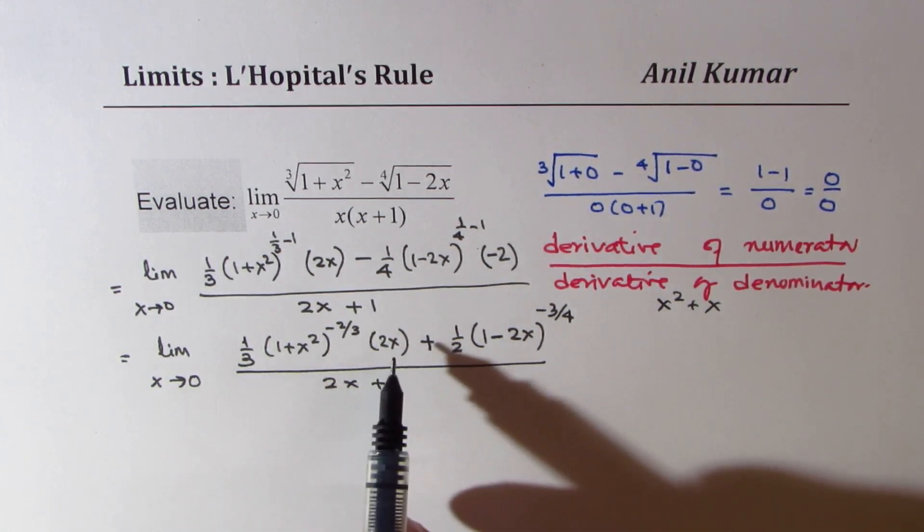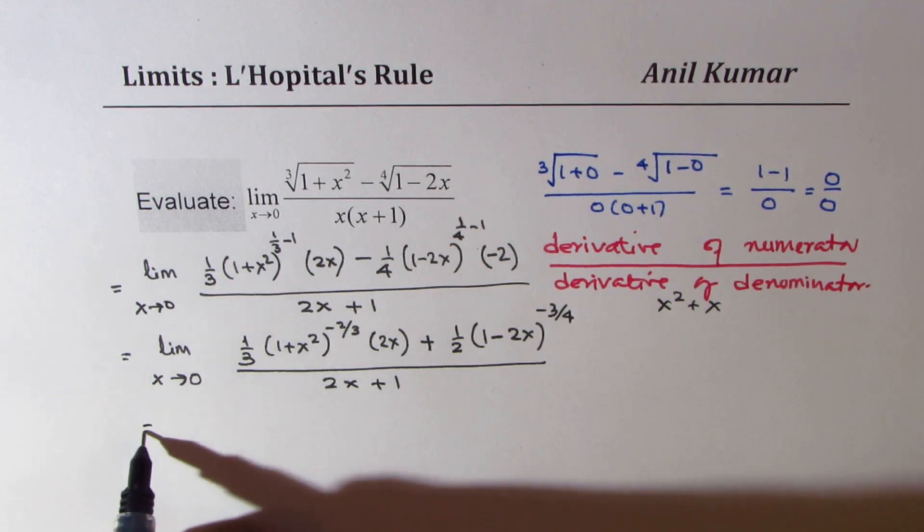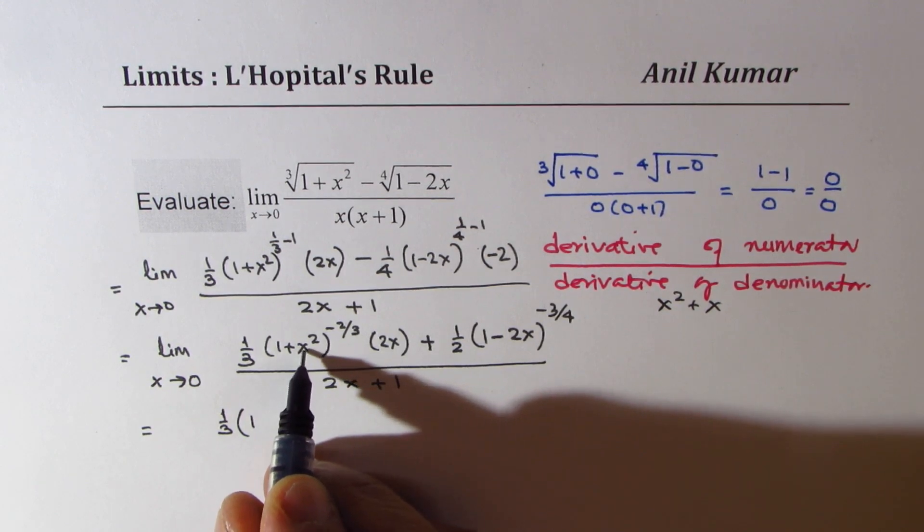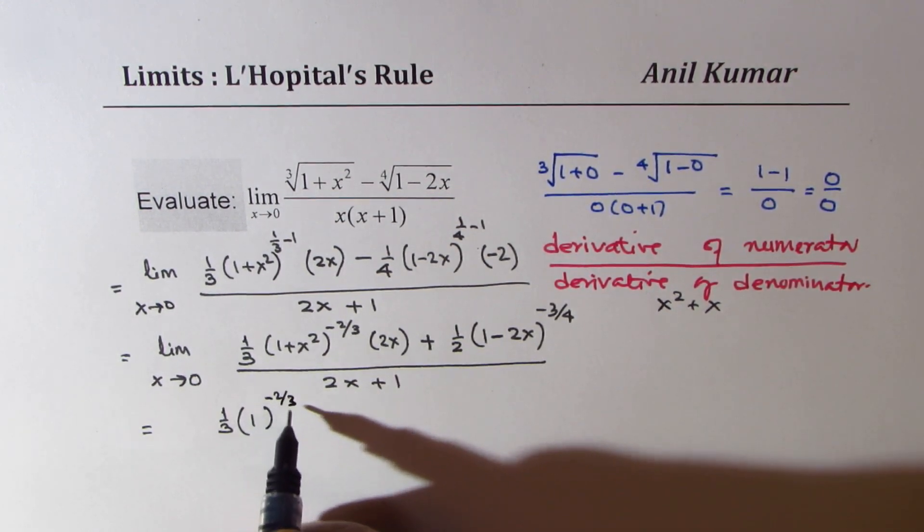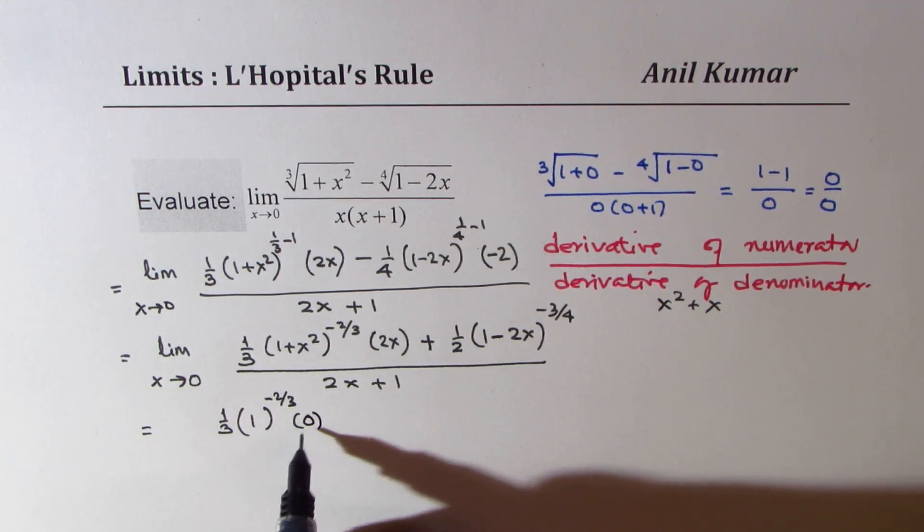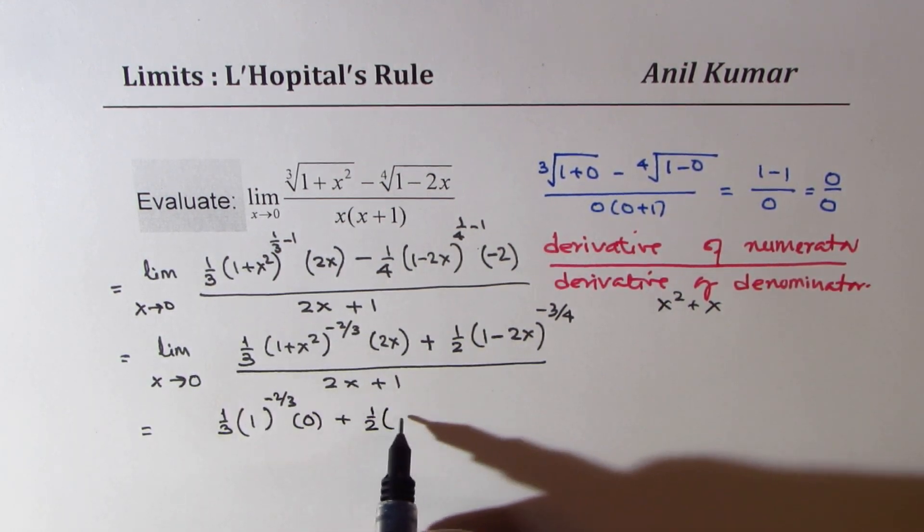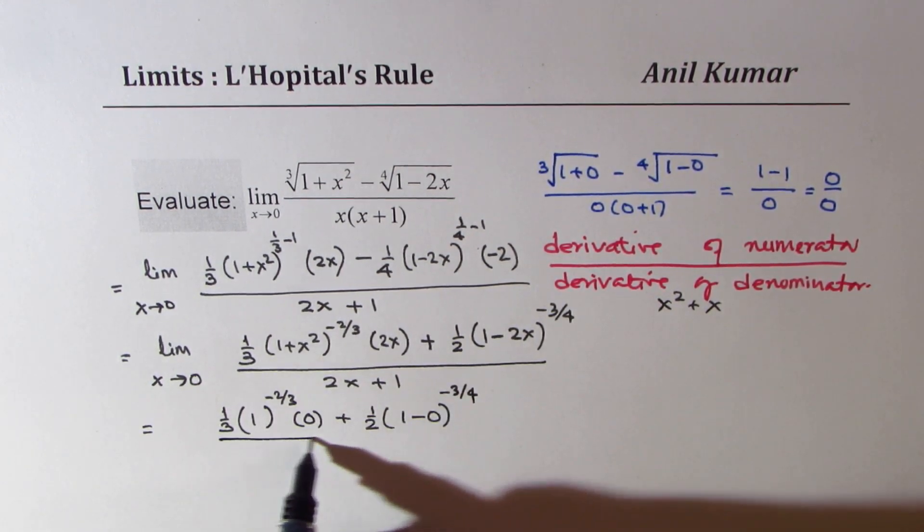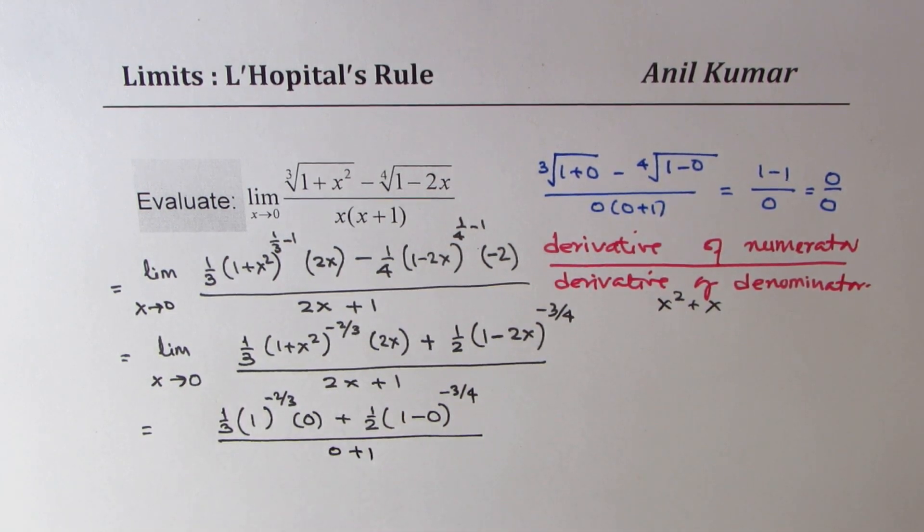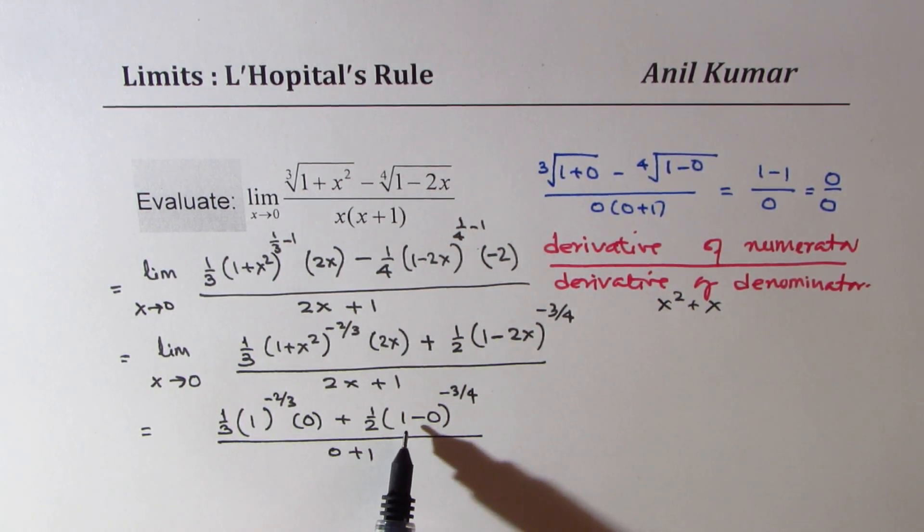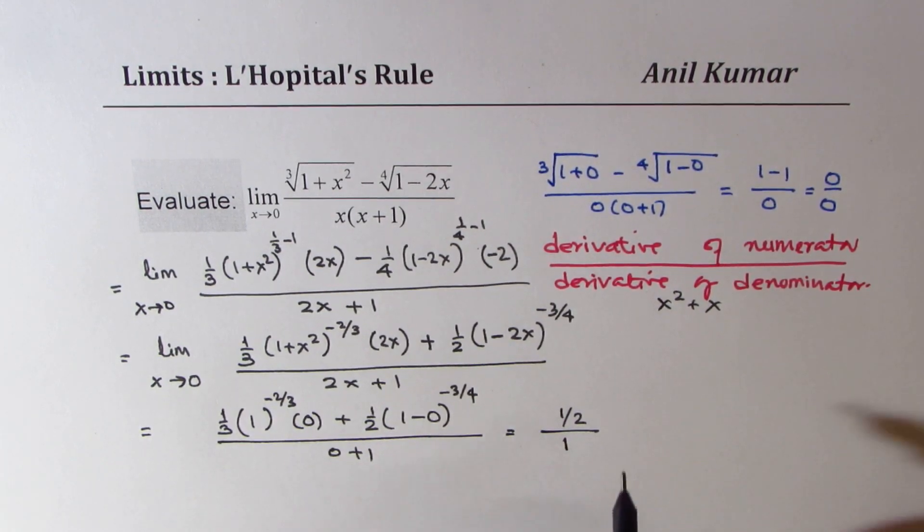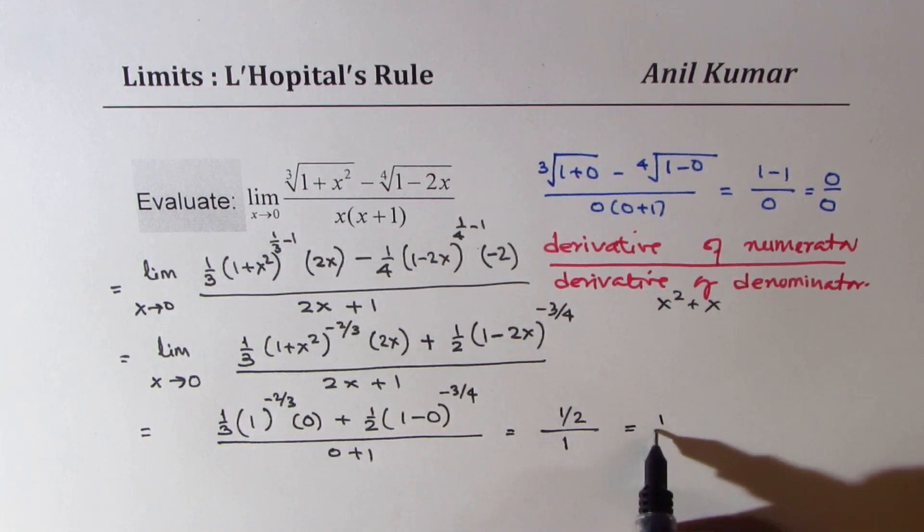Now, let us substitute 0 and find the limit. So, if I substitute 0 now, what do I get? I get 1 over 3 times 1, so this is 0, to the power of minus 2 over 3 times x is 0. So, this term is 0. Plus half of 1 minus 0 to the power of minus 3 over 4 over 0 plus 1. So, the first term is 0. The second term gives us half. So, we get half over 1. So, the limit for this particular function is half.